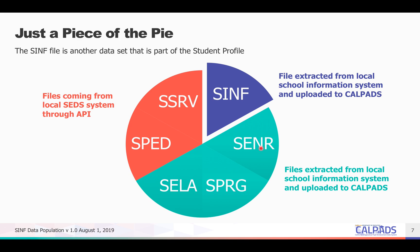Here are the different components of the Student Profile Foundation in CALPASS. We have the SENR (Student Enrollment), SPRG (Student Program), SELA (Student English Language Acquisition), and SPED and SSRV, which are related to students with disabilities. We will discuss these components in our other trainings. Our focus today will be on the SINF. This information can be extracted from your local student information system and uploaded into CALPASS, or it can be added or updated in CALPASS online maintenance.